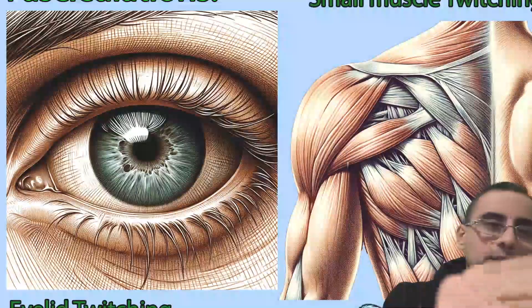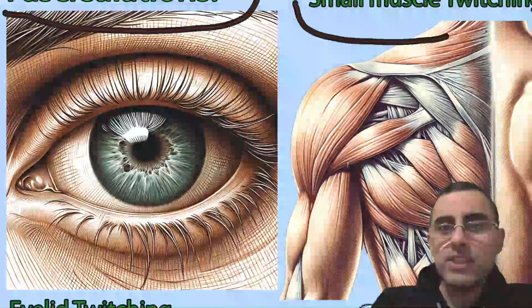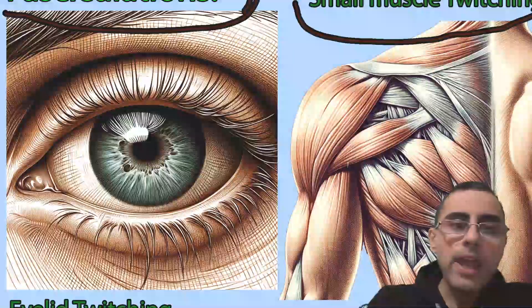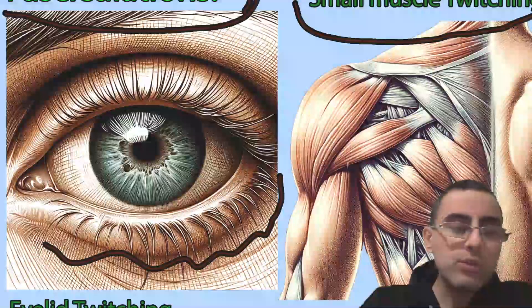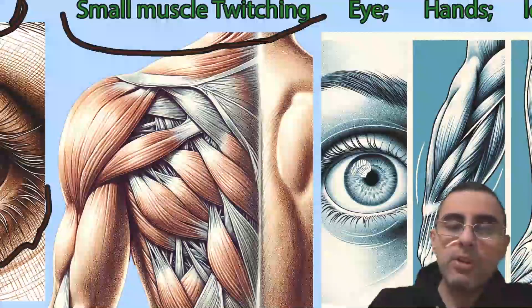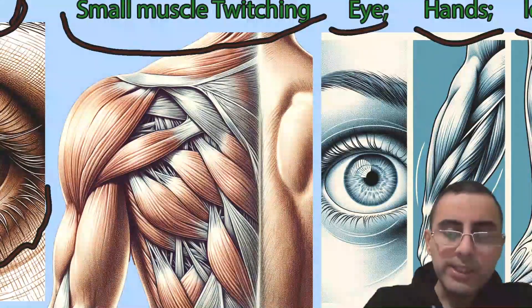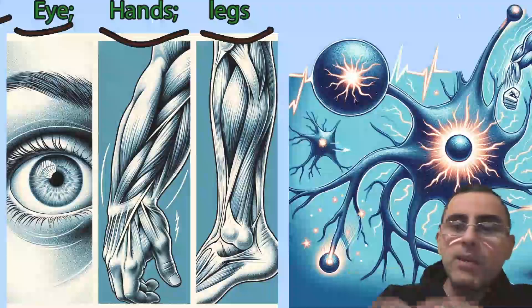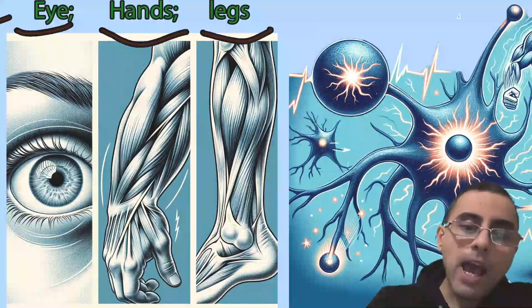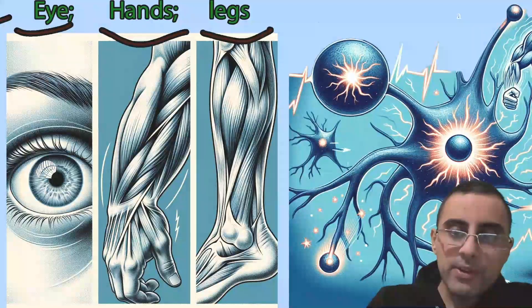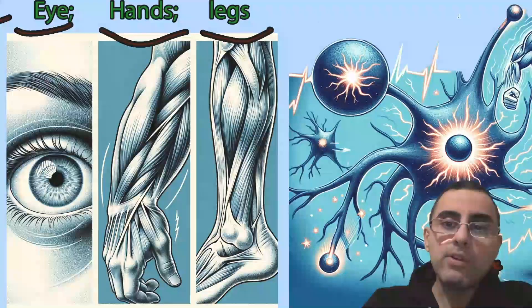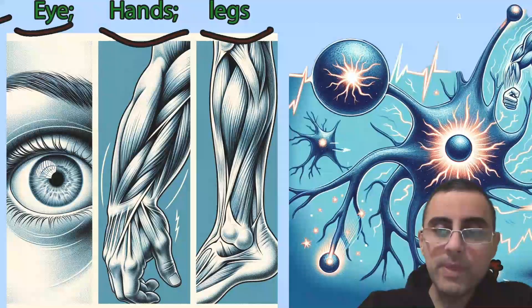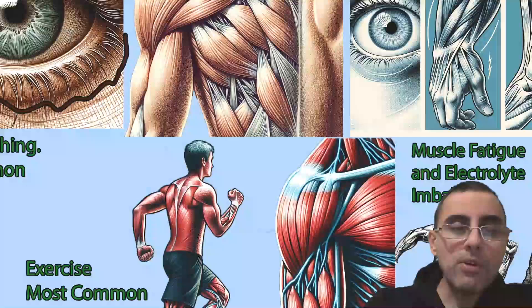We will talk about fasciculations. Fasciculation is small muscle twitching which is visible in many cases. The most common form is eyelid twitching, which is usually harmless. Fasciculations most commonly affect the eyes, hands, and legs, but literally any muscle can be affected, including the tongue. The underlying mechanism is hyperexcitability of motor neurons — the signal is converted to muscles, and muscles involuntarily contract.